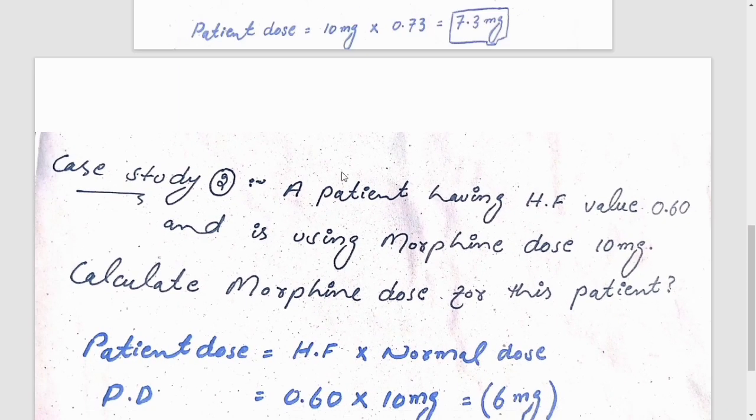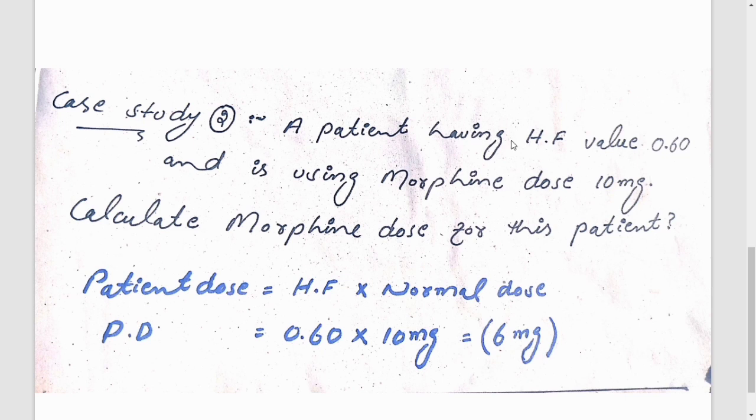So we will administer 7.3 milligrams instead of 10 milligrams. We have another case: a patient having hepatic failure value of 0.60, it means that 60% liver is functional, and he is using morphine. Normal dose of morphine is 10 milligrams. So now we have to calculate morphine dose for this patient.